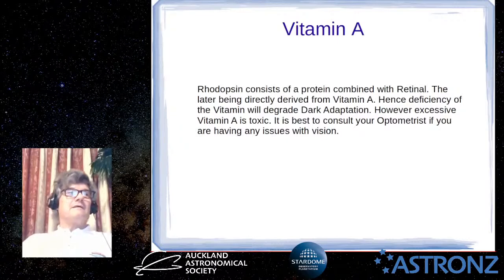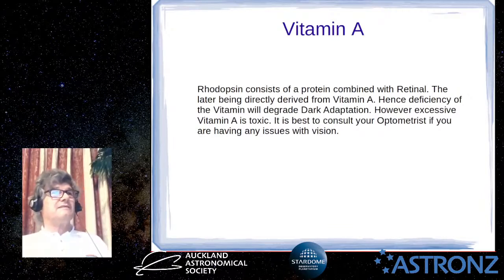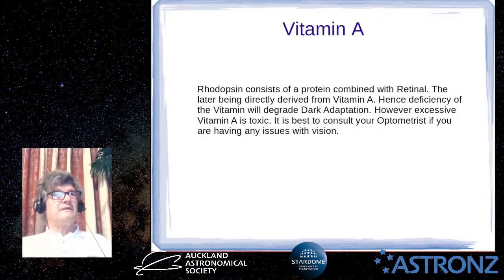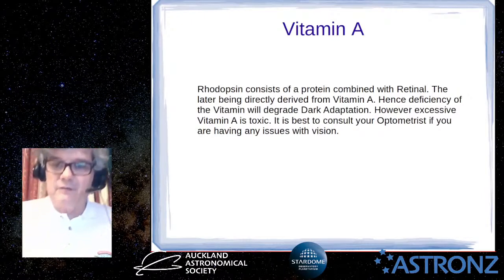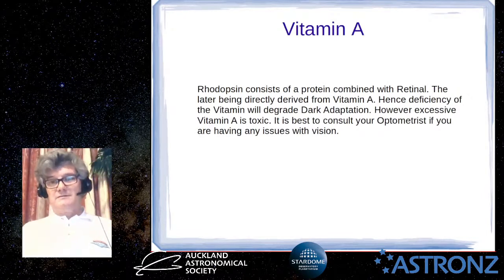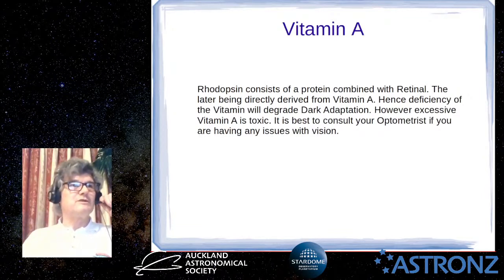Vitamin A is good for eyesight, particularly in low-light conditions, because rhodopsin — also called visual purple — is a protein combined with retinol, which is directly derived from vitamin A. A deficiency can impair your ability to see in dim light. But don't ingest large quantities of vitamin A as it can be toxic — if you have problems in this area talk to your optometrist or doctor.